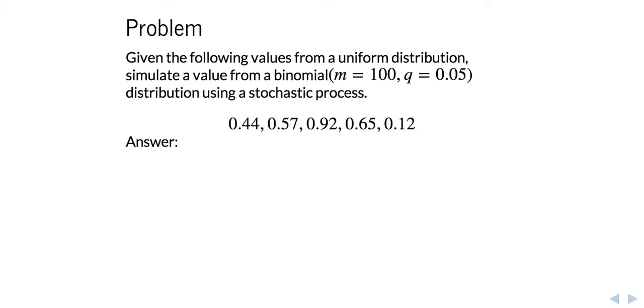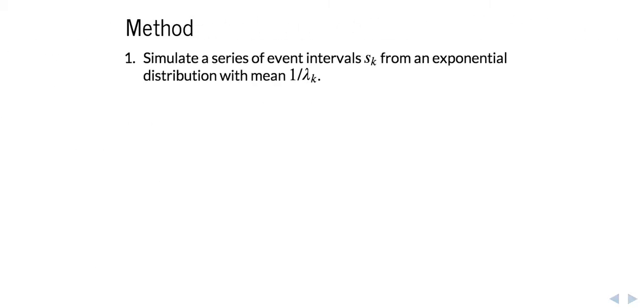You're given a bunch of uniform values, and here are the possible answers. So the method goes something like this. A discrete distribution is normally used to model the number of events that occur over some specified time interval.